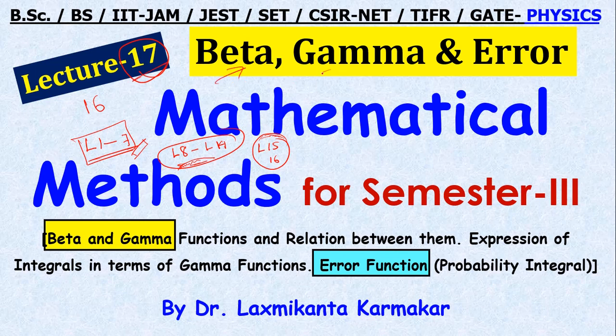In lecture 17 we discuss some special functions: beta, gamma, and error functions. We discuss beta and gamma functions, their relationship, and the error function. These functions will help us express results in kinetic theory of gases, thermodynamics, and statistical mechanics.